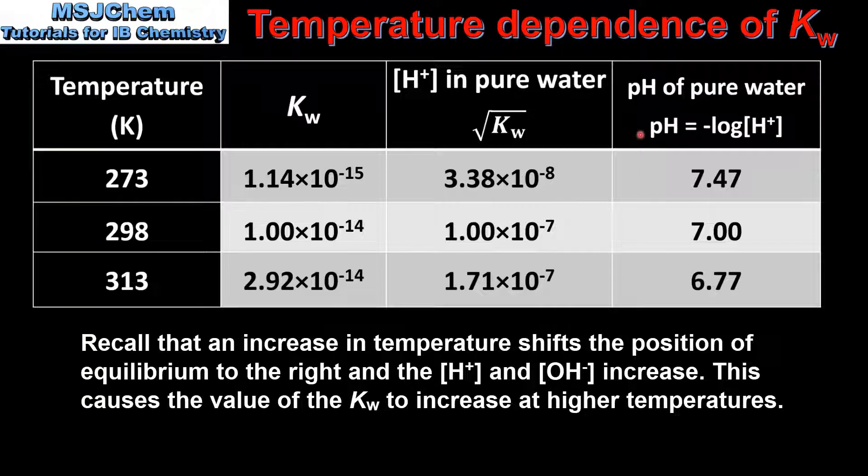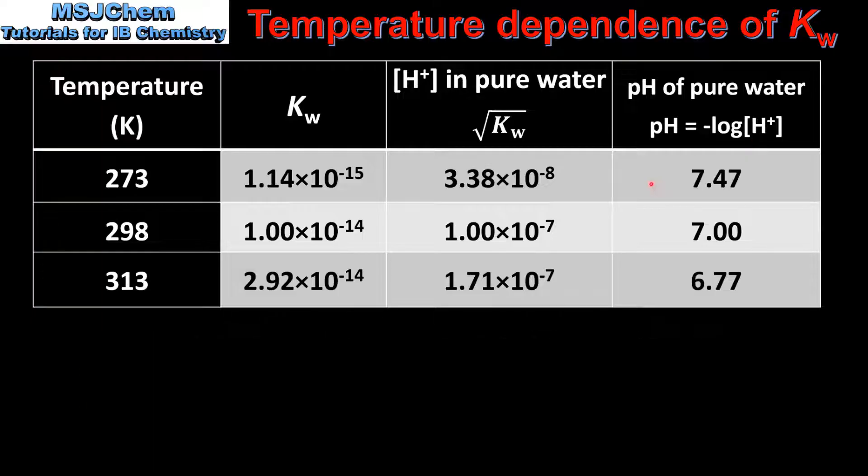We can then find the pH of pure water by taking the negative log of the hydrogen ion concentration. So as we can see as the temperature increases the pH of pure water decreases.